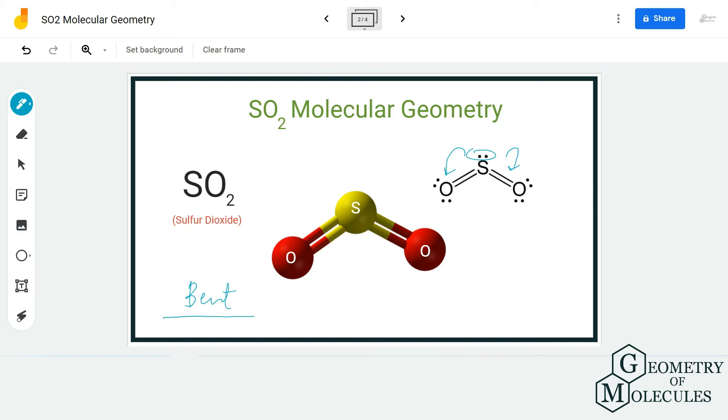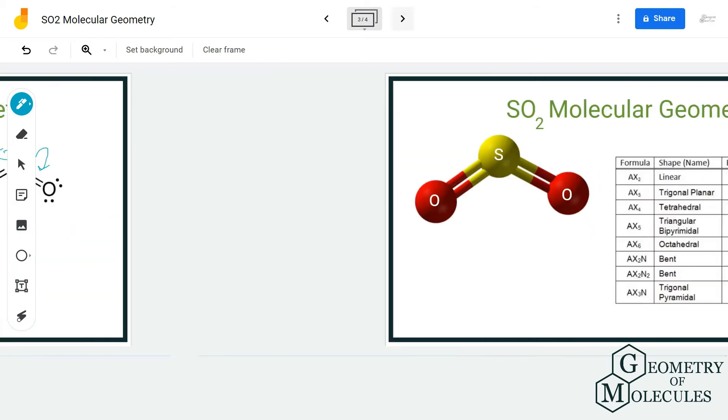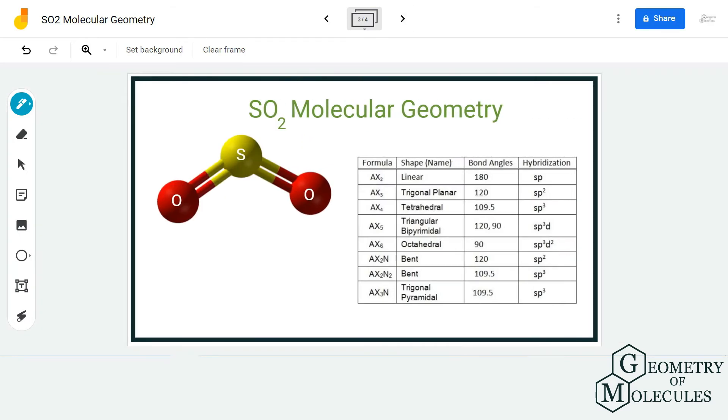The molecular geometry according to VSEPR theory is bent, but we are also going to use AXN notation method to find out if we are on the right track. A stands for the central atom, X is the number of atoms that are forming bonds with the central atom, and N is the number of lone pairs of electrons on the central atom.